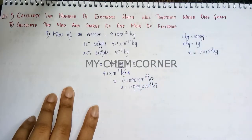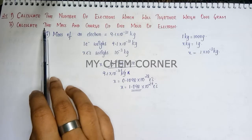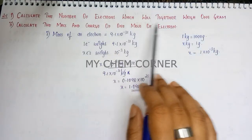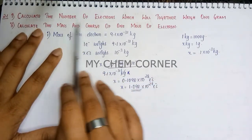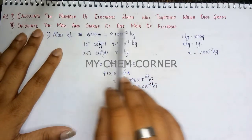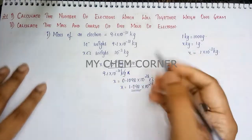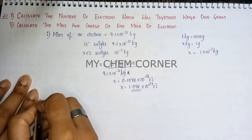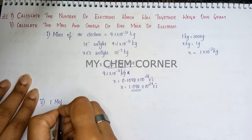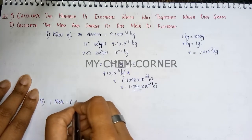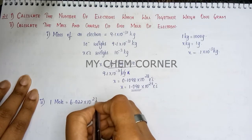The second question asks us to calculate the mass and charge of 1 mole of electrons. First, we need to recall what 1 mole means: 1 mole equals Avogadro's number of electrons, which is 6.022 × 10²³.